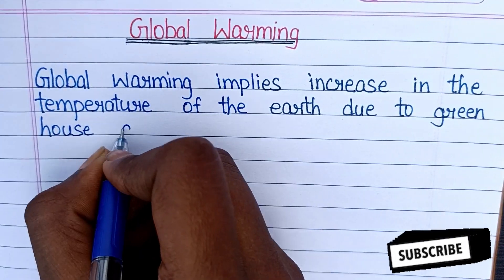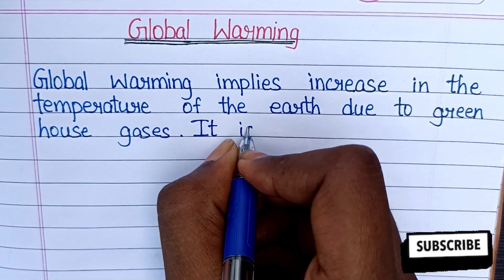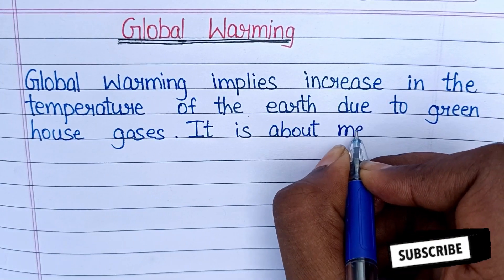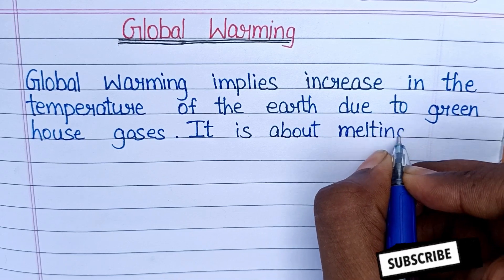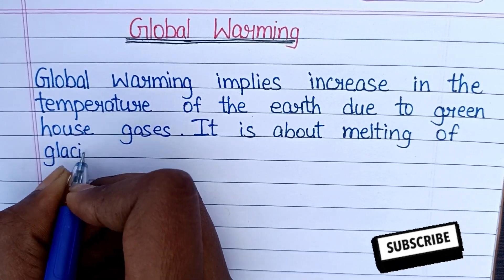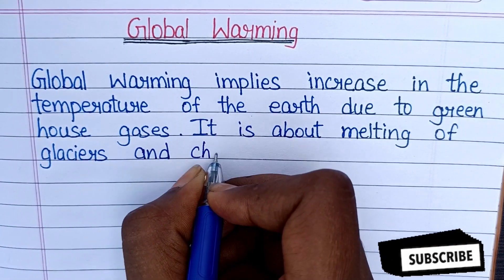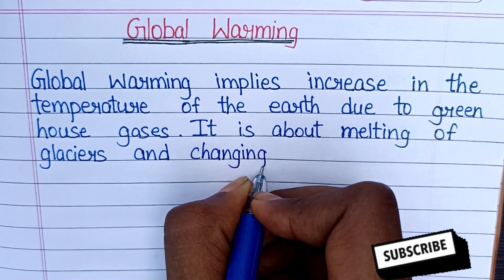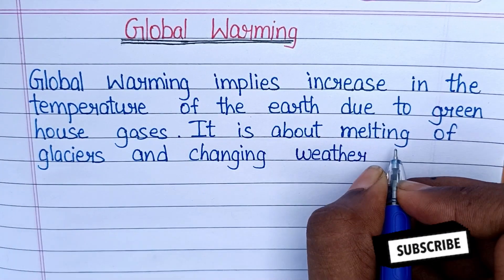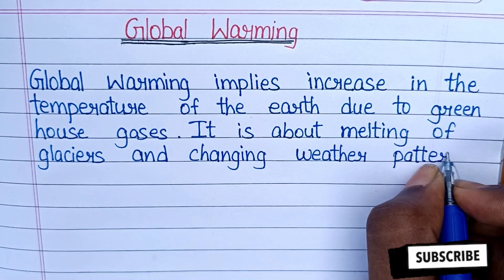Global warming implies increase in the temperature of the earth due to greenhouse gases. It is about melting of glaciers and changing weather patterns.